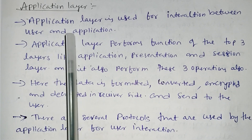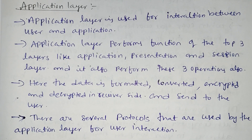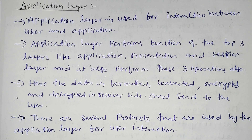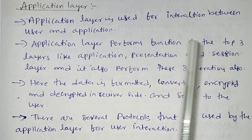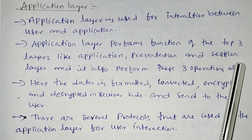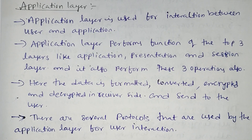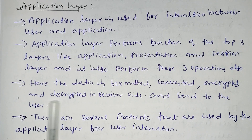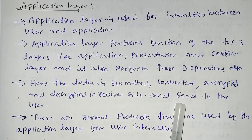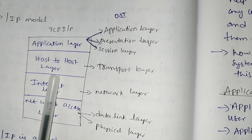The application layer is used for interacting between the user and applications. It performs functions of the top three OSI layers: application, presentation, and session layer. Here, the data will be formatted, converted, encrypted, and decrypted before being sent to the receiver.